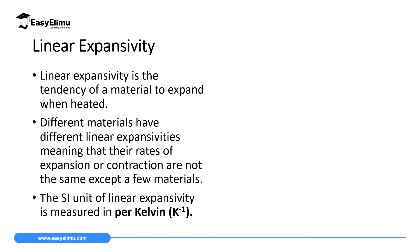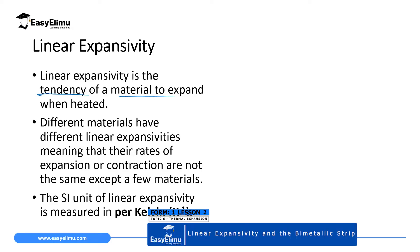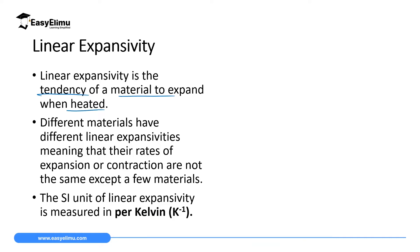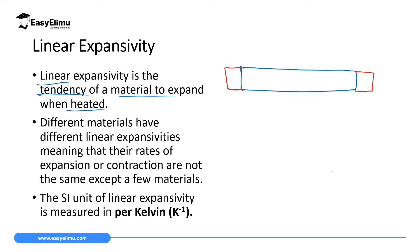Linear expansivity is the tendency of a material — in this case solids — to expand when heated. Linear expansivity means expanding in a straight line. If you have a solid and you heat it, it will expand toward both sides, so it has expanded in a line.